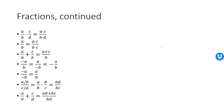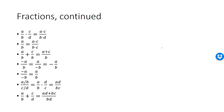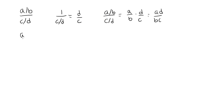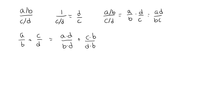Our final fraction rule tells us how to add two fractions when the denominators are different. First we need to make the denominators equal, so we multiply the first fraction by D, giving A times D over B times D, and we multiply the second fraction by B, giving C times B over D times B. Now that we have the same denominators, we can simply add the numerators, giving AD plus BC over BD.